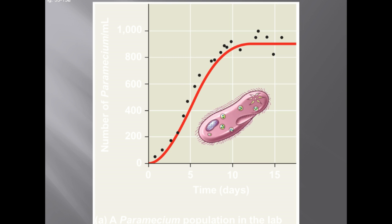The growth of laboratory populations of paramecium fits an S-shaped curve. These organisms are grown in a constant environment lacking predators and competitors. You get an initial explosion of population that looks exponential, but eventually — for example, on an agar plate — resources and nutrients run out, and the population levels off at the carrying capacity. In this graph, that's somewhere around 850 to 900.